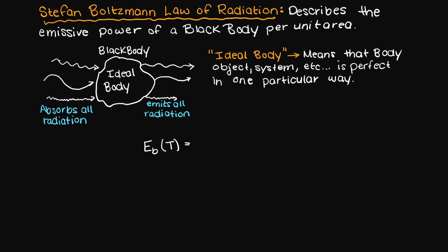So let's get further into what Stefan Boltzmann's law of radiation is. So this equation states that a black body surrounded by a vacuum will have an emissive power of the Stefan Boltzmann's constant times the body's temperature to the fourth power.